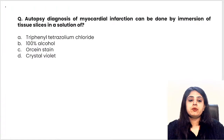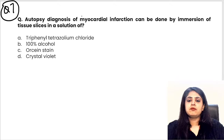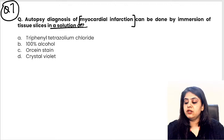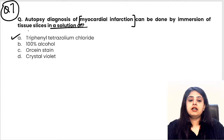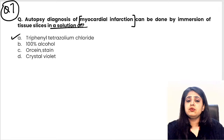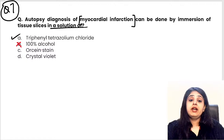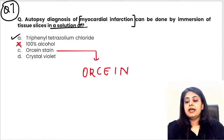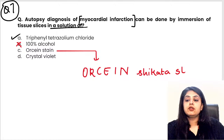Question seven, the confidence booster for the end: myocardial infarction — what solution is used for diagnosis? The answer is option A — TTC, triphenyl tetrazolium chloride. Now let me also cover the other options. Orceine stain — its full name is Orceine Shikata stain.